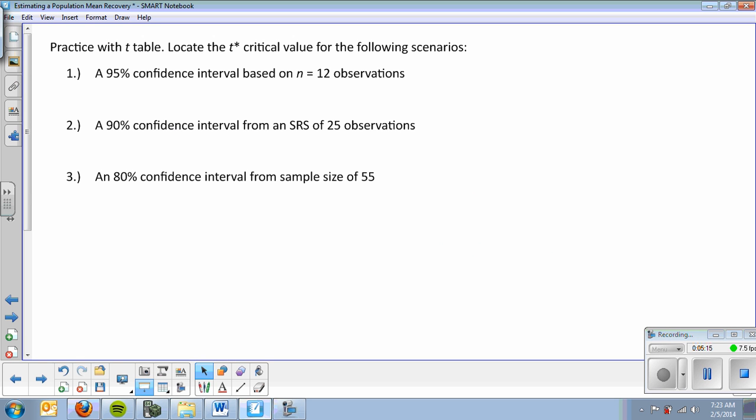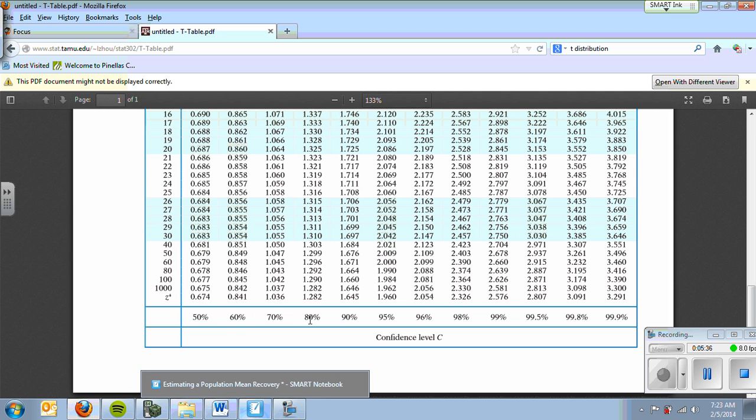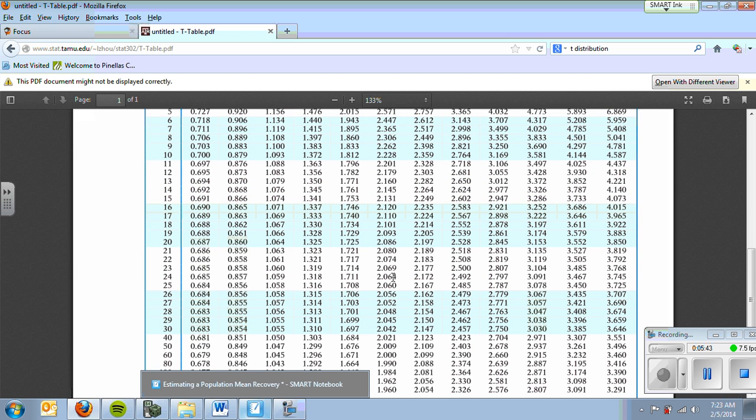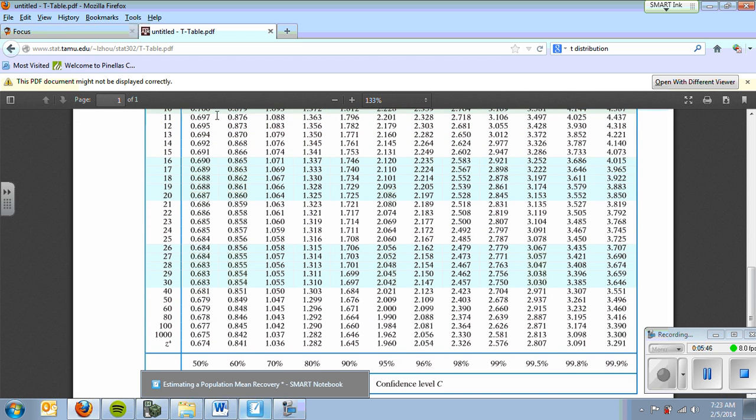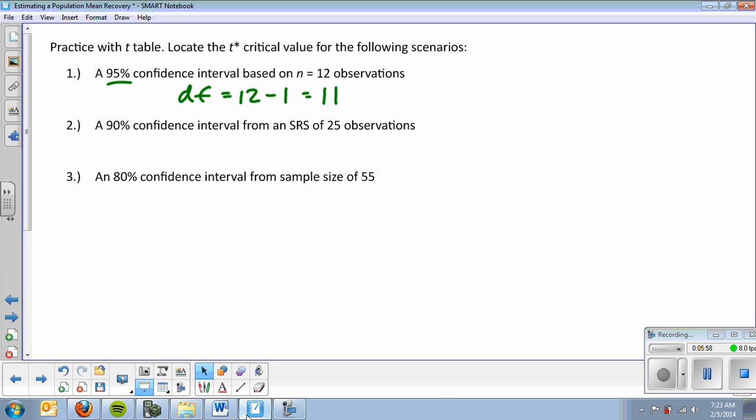Let's say locate the T star, critical value, for a 95% confidence interval based on N equals 12 observations. In this case, the degrees of freedom is 12 minus 1, which is 11, and I want 95% confidence. So I go to my table, and I am at 95% confidence, and my degrees of freedom were 11. So I find 11, 95%, 11 degrees of freedom, I scan over, and I get 2.201. So that is my T star.